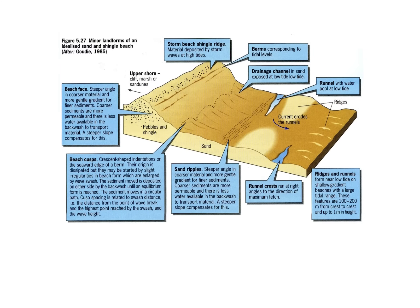Thinking about features at a beach, these are what we call minor landforms. If you had a photograph in front of you, would you be able to identify the runnel like you can in this diagram here? Would you be able to identify the cusps? Just check you can pick them out in a diagram and know roughly what they are.